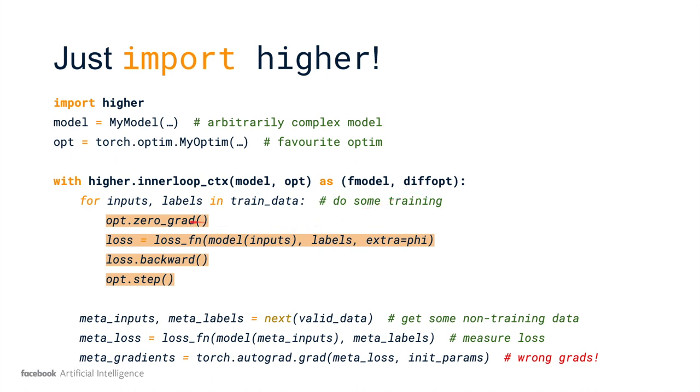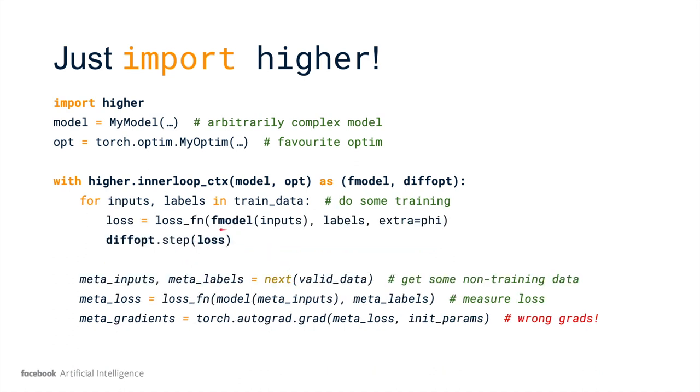In particular, this removes the need to call zero_grad and backward. We're not doing things in place anymore, and backward will be incorporated into the differentiable optimizer step. We simply replace our call-to-model with our call-to-f-model here and change nothing else. We change our method invocation on the optimizer to one over the differentiable optimizer, and we have to feed as an additional input the loss so that it can take the gradients.